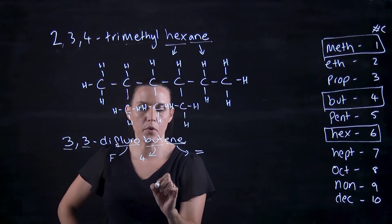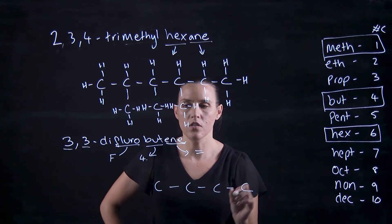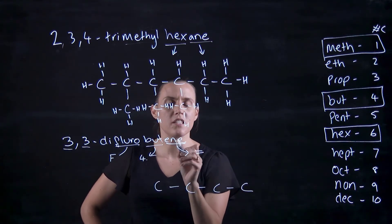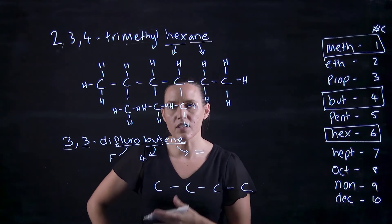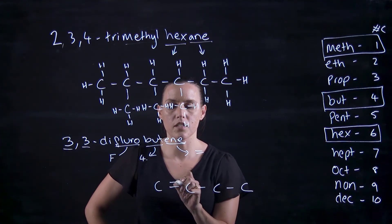So if we start with our backbone, one, two, three, four, we've got a double bond. It's not saying where that double bond is. So if it doesn't say it's between carbons one and two.